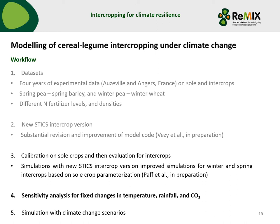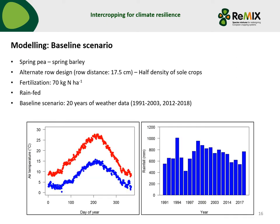The last final step will be simulations with real climate change scenarios. For the sensitivity analysis, the baseline scenario used 20 years of weather data. I made fixed changes in CO2, temperature and rainfall to the daily values. Temperature was increased by 2, 4, 6 and 8 degrees; rainfall was reduced by 20, 40, 60 and 80 percent; and CO2 concentration was increased to 450, 540, 630 and 720 ppm. On the left side you see the mean across 20 years for maximum and minimum temperature, and on the right side the cumulative rainfall, showing considerable variation.